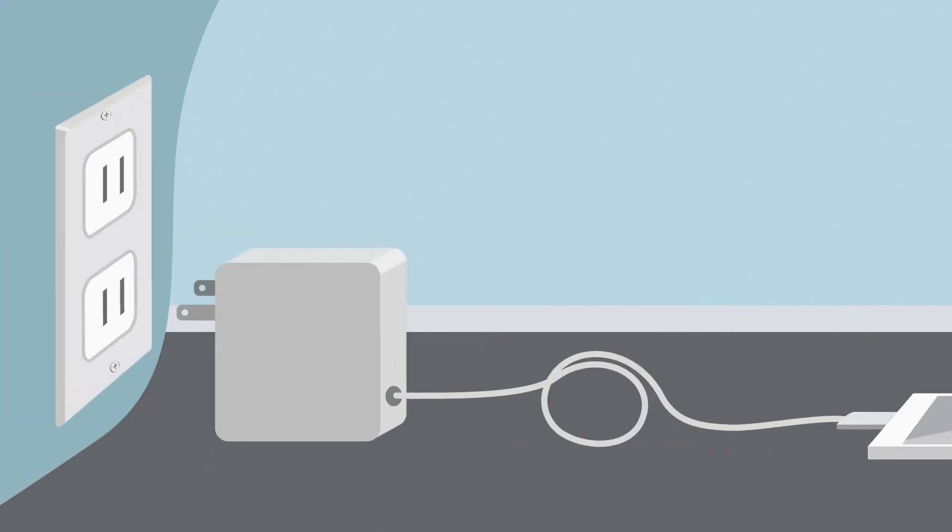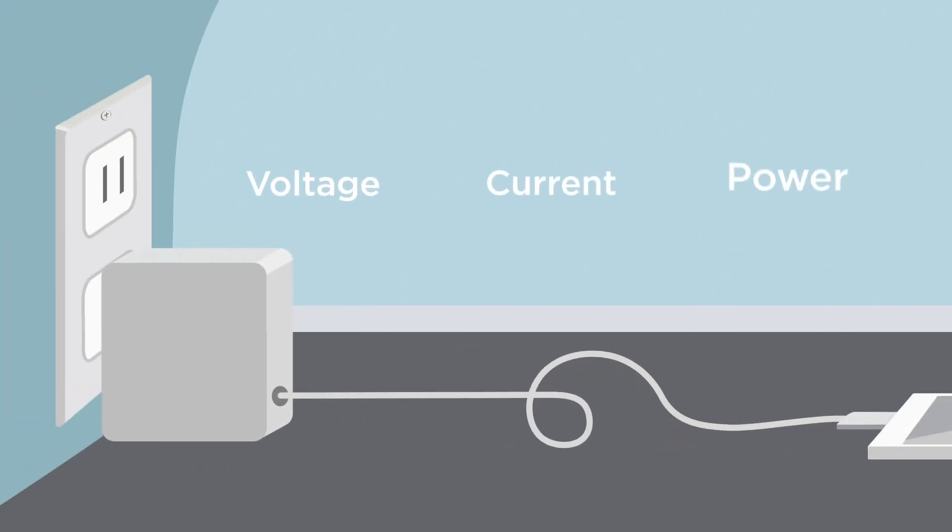The basics of electricity include voltage, current, and power. These measurements define how efficient and powerful an electrical system is.